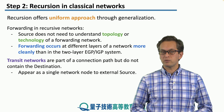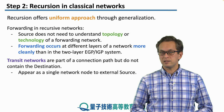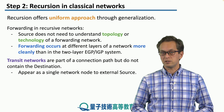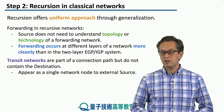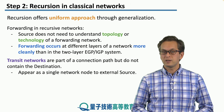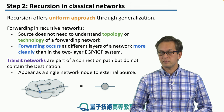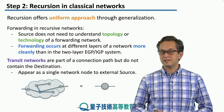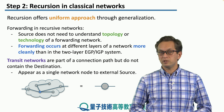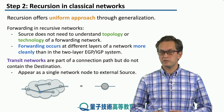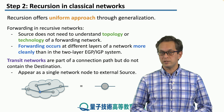We introduce the concept of a transit network. This is the network that does not include the destination of the packet, so the packet simply passes through it. In recursive classical networks, such a transit network appears as a single node to the external source. The source doesn't care about the internal details — it only thinks of it as a single node along the path to the destination.